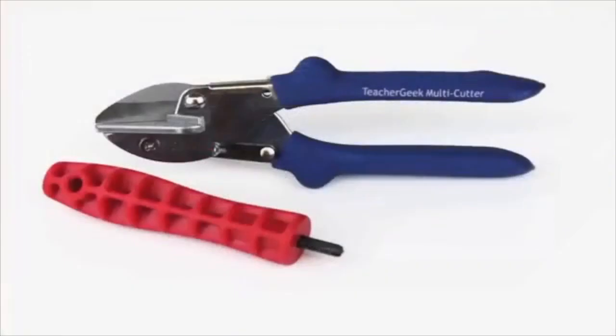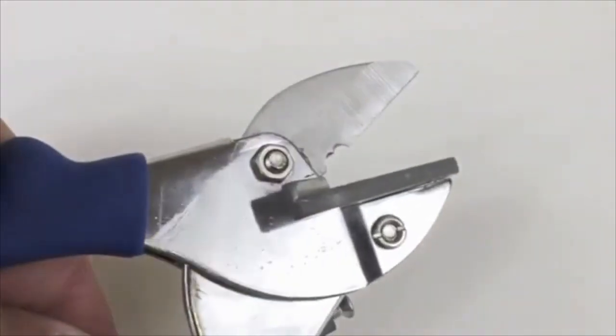The TeacherGeek construction system allows you to build almost any mechanism you can imagine using two simple tools. The dowels and connector strips can be easily cut to size using our TeacherGeek multicutter. But don't use the multicutter to cut metal because you'll ruin the blade.